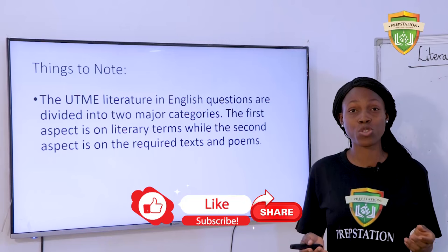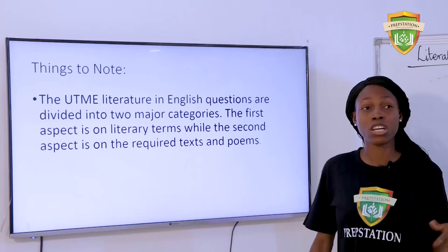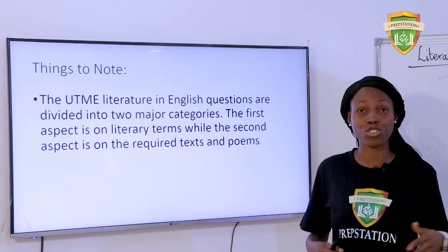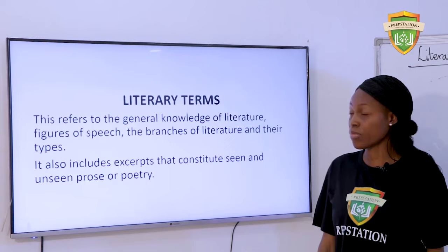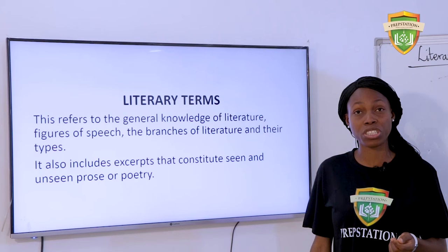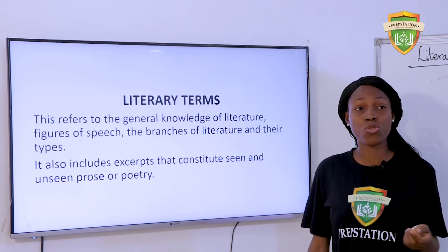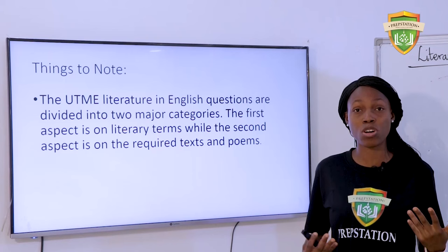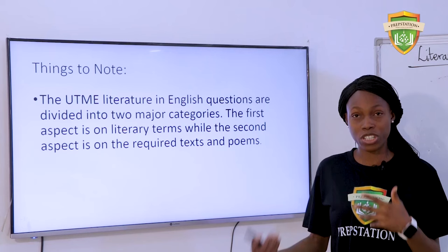There are things we must note. First, the UTNA Literature in English questions are in two parts. The first aspect you will be tested on is the literary texts, and the second aspect is the general principles of Literature in English. We look at literary terms which fall under the general principles, and such literary terms include things like figures of speech. You also have other things you are expected to know when it comes to prose, drama, and poetry — probably their characteristics and other items as well.